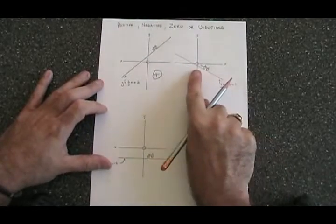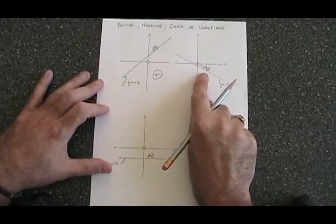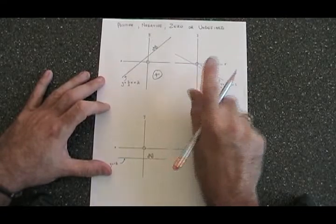In this one, my bike is going downhill, so it is going quite fast. That means I have a negative slope.